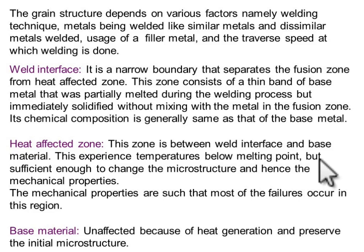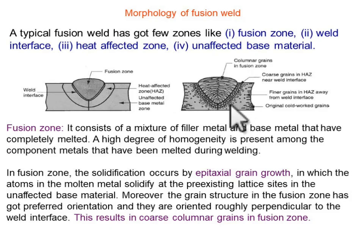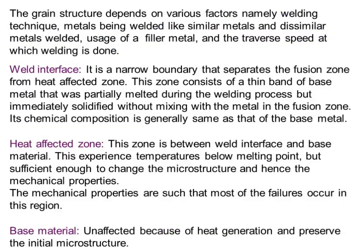Although melting does not occur in the heat affected zone, the temperature is sufficient to change the microstructure and properties of the material. When we perform the welding operation, the properties and grain arrangement of the heat affected zone get changed. This is the weakest and most damaged part of the welded component — if any failure occurs after welding, it usually happens in the heat affected zone. Therefore, we try to minimize the heat affected zone to reduce failure after welding.